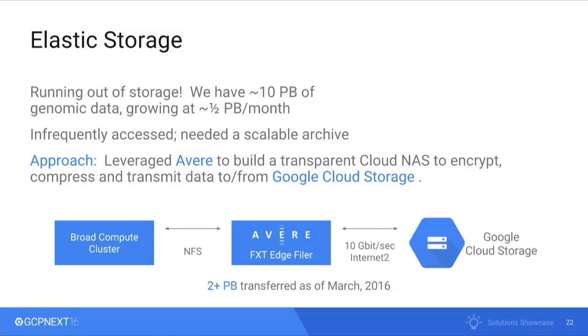Now with our genomic data factory in the cloud, we turned back to our genomic data storage problems. We're running out of on-prem storage — 10 petabytes growing at half a petabyte a month. We looked to a technology called Avere, which sits between Google Cloud Storage over our Internet2 10-gigabit connection and presents an NFS mount point to our cluster. Data moved to the mount point is transparently compressed, encrypted, and transmitted to Google Cloud. We've transferred over two petabytes this way just this month.